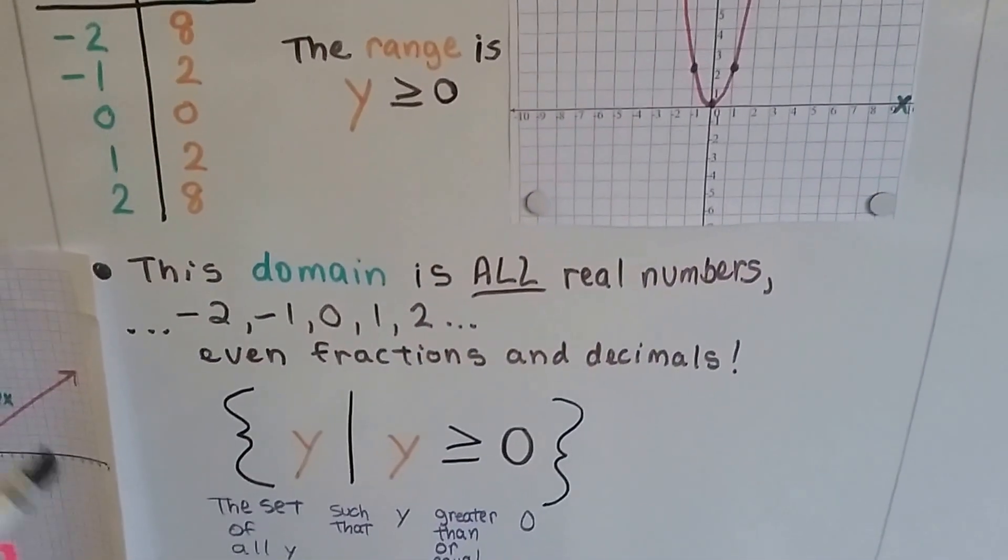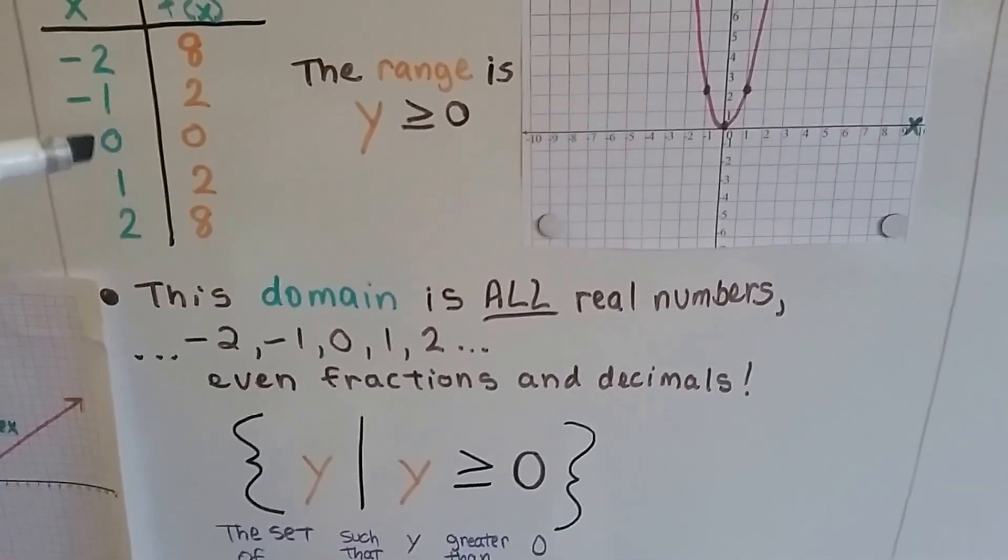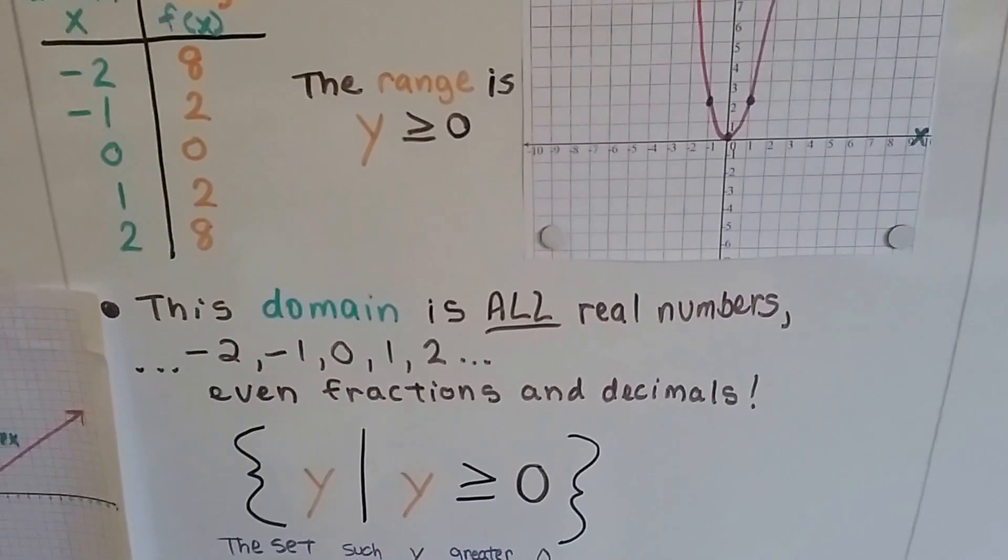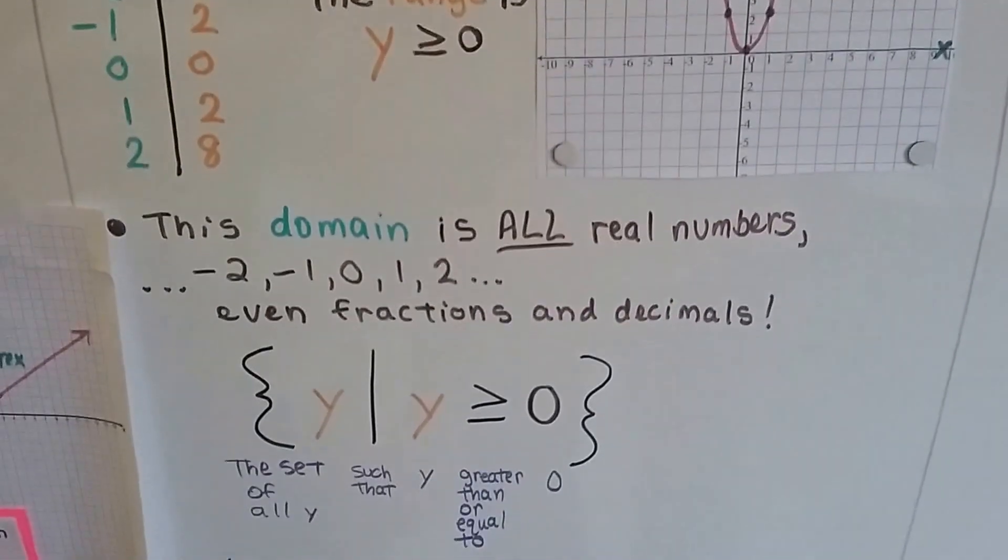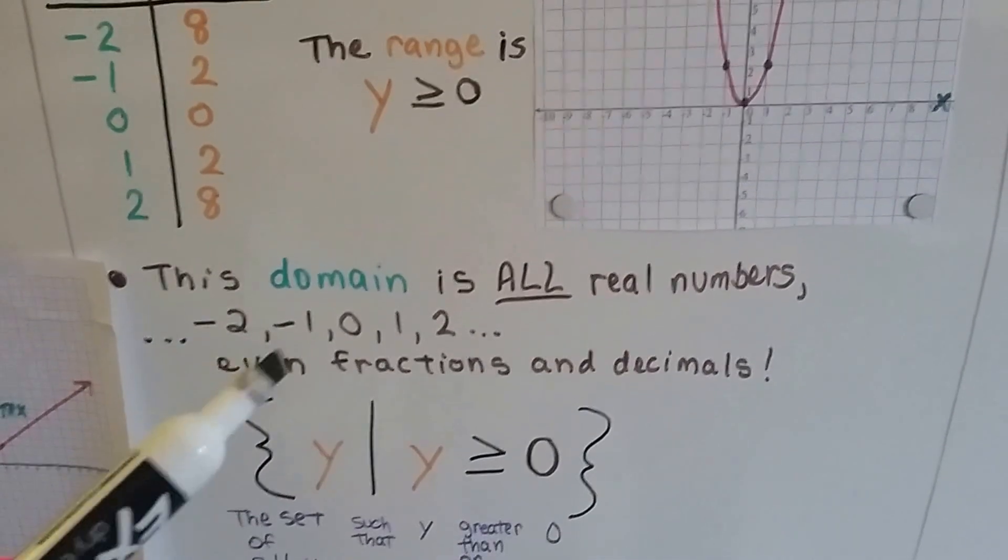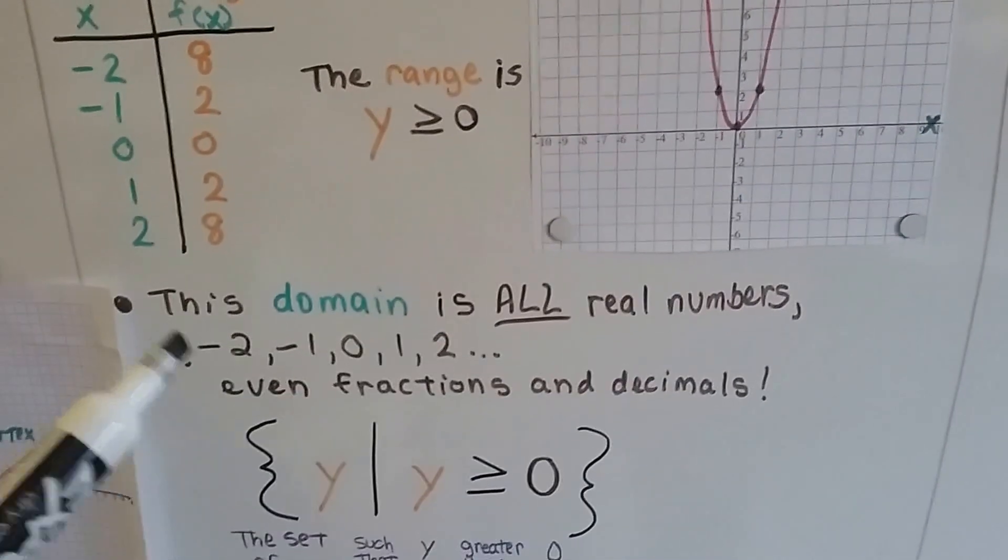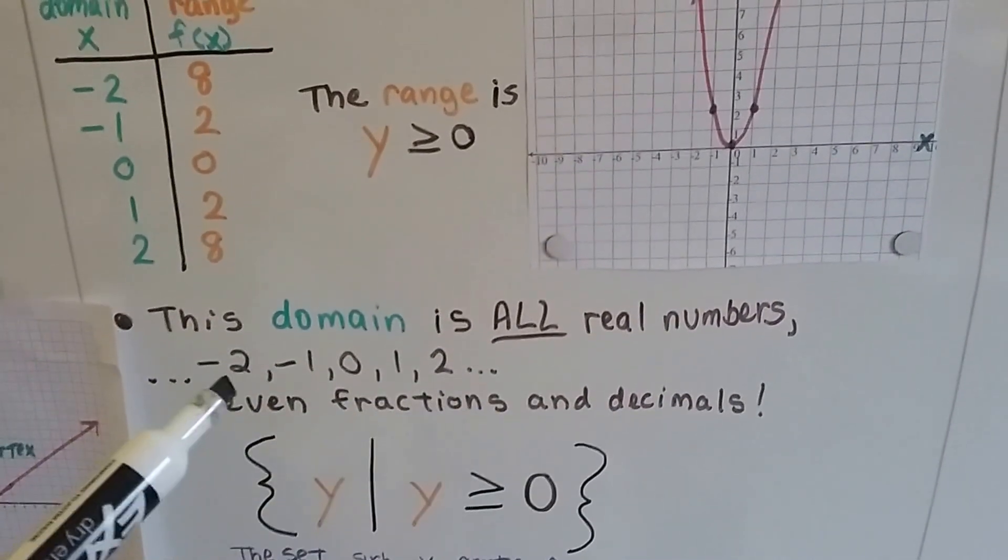This domain is all real numbers. If you look, it's going 0, negative 1, negative 2, and it'll continue. And then this way, it's going 1, 2, see? The domain is all real numbers, see? Even fractions and decimals.